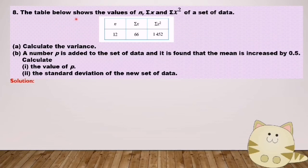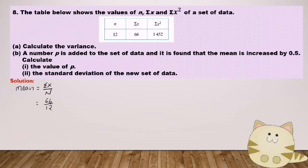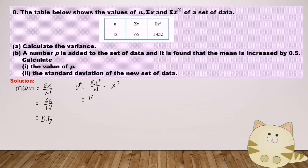Question number 8. The table shows the values of n, sigma x, and sigma x squared of a set of data. Calculate the variance. Before finding the variance, find the mean. From the table, sigma x equals 66 and n equals 12. Mean equals 66 divided by 12 equals 5.5. Variance equals sigma x squared over n minus square of mean: 1452 divided by 12 minus 5.5 squared equals 90.75.